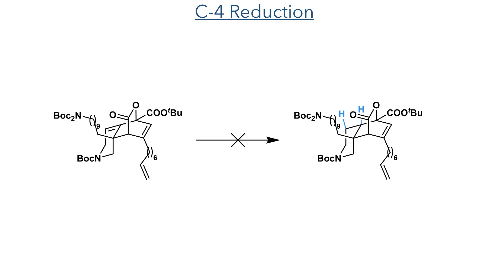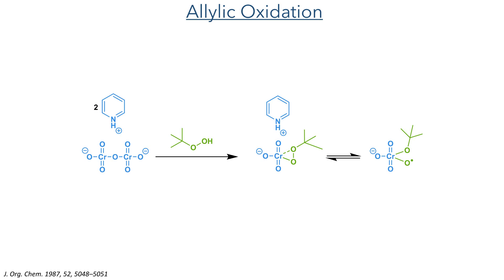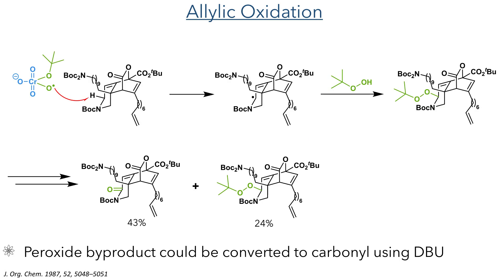With the azadecalin scaffold now complete, the alkene at the C4 position needed to be reduced. The researchers were unable to do this directly, so instead they first oxidised the C3 position. Pyridinium dichromate first reacts with tert-butyl hydrogen peroxide, forming a peroxy adduct that then undergoes homolytic cleavage to produce an oxygen radical. This radical can attack a hydrogen at the allylic position, producing an allylic radical that reacts with a further equivalent of TBHP, which then goes on to form the carbonyl. They found that this reaction didn't go to completion, and they could isolate a 24% yield of the peroxide intermediate. They could convert this material to the desired carbonyl using DBU.